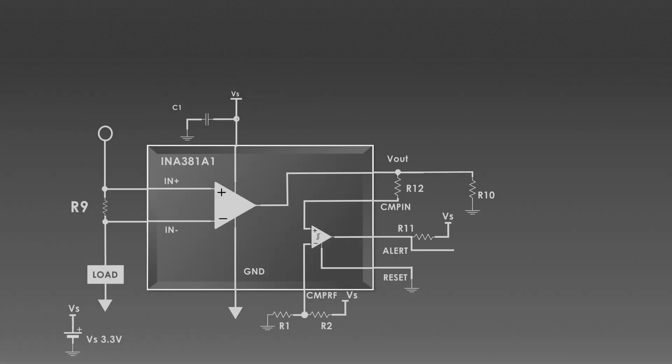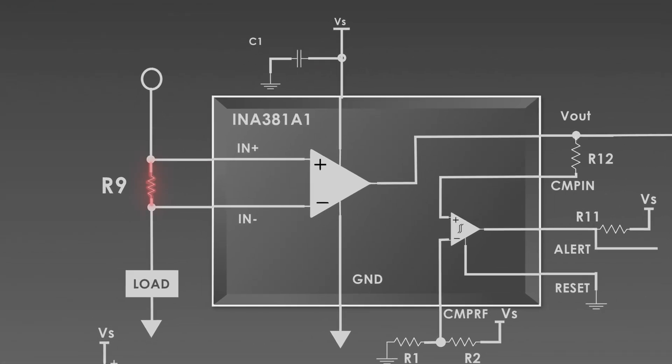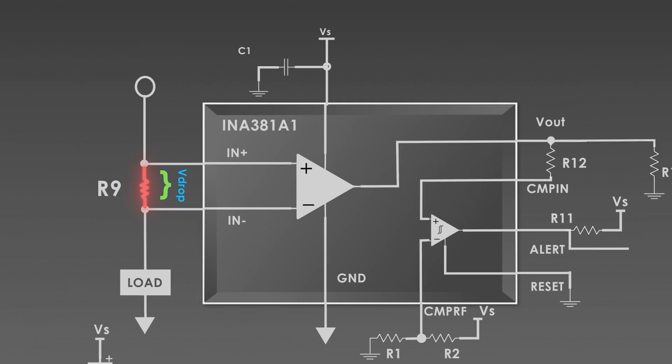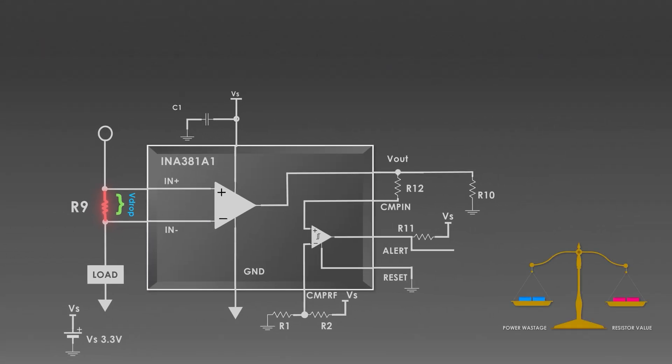The first and most important part of the current sensing circuit is the shunt resistor. This resistor will measure the current by creating a small voltage drop. We select a low-value resistor, so it doesn't waste too much power. But it must be high enough to generate a measurable voltage. So, we can calculate the value of the shunt resistor using this formula.